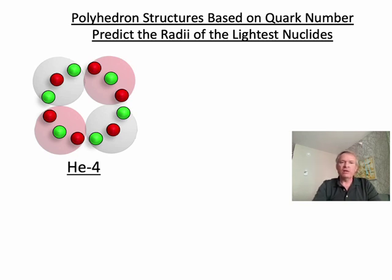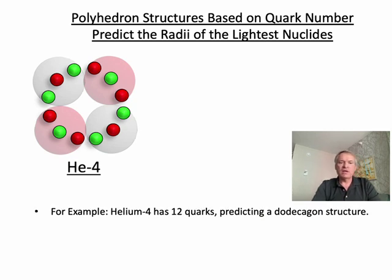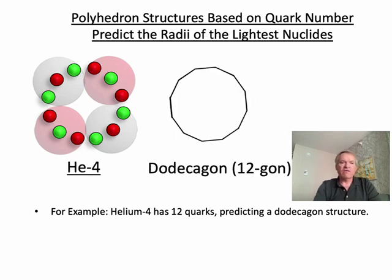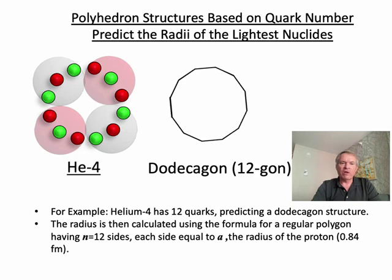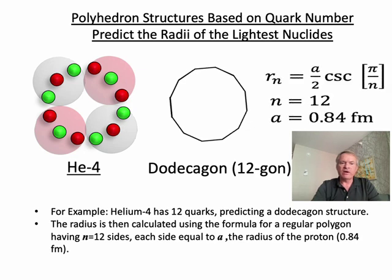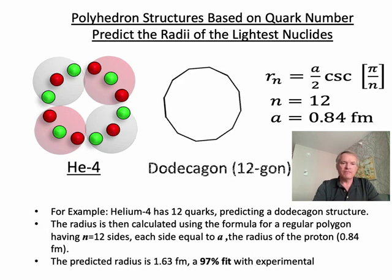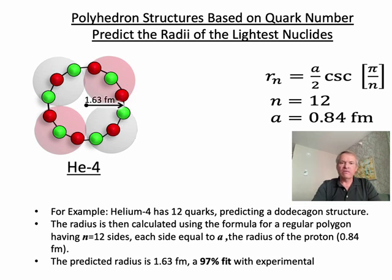So for lighter nuclides, the formula for a regular polygon can be employed to predict the radius. Helium-4, for example, has 12 quarks predicting a dodecagon structure. If each quark occupies a single vertex of the dodecagon, then we can use the formula of the regular polygon, having n equal 12 sides, with each side equal to a, the radius of the proton. The result is 1.63 femtometers, which is a 97% fit with the observed value of 1.68 femtometers.